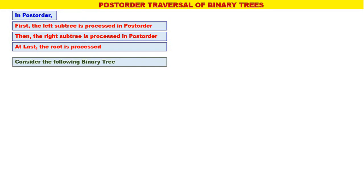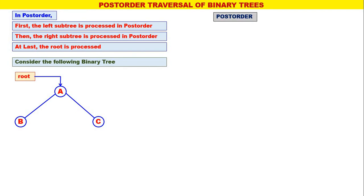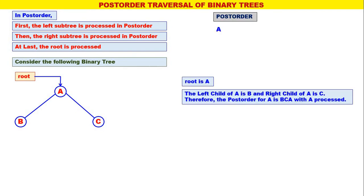Consider the following binary tree. Let us consider a simple binary tree with only three nodes A, B, C. The root is A. The left child of A is B and the right child of A is C. Therefore, the post-order for A is B, C, A.